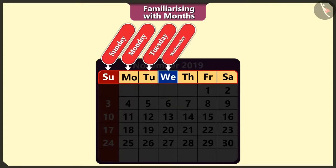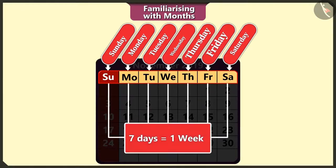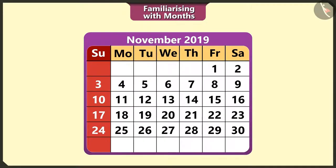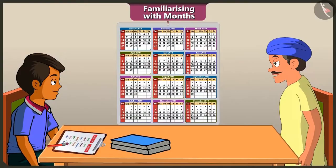Wednesday, Thursday, Friday, and Saturday. A group of these seven days is called a week. To find the day of a date, look at the weekday name column in the calendar — in whichever weekday column a date falls, it is that day. The 23rd is showing in the Saturday column in the month of November. So 23rd November is a Saturday!